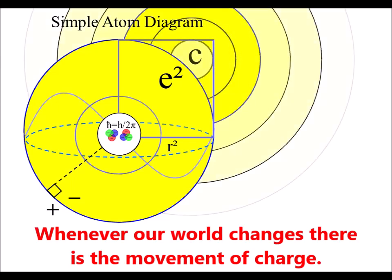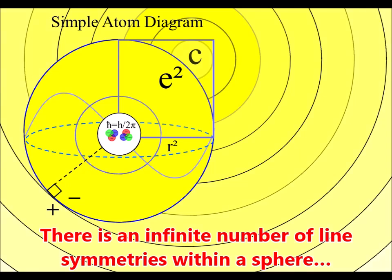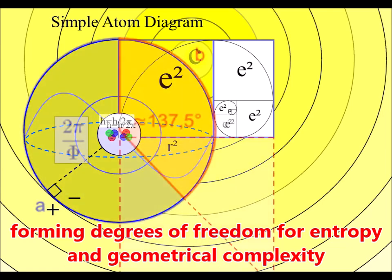A process of spherical symmetry forming and breaking forms the characteristics of three-dimensional space forming statistical entropy with a potential for ever greater symmetry formation.